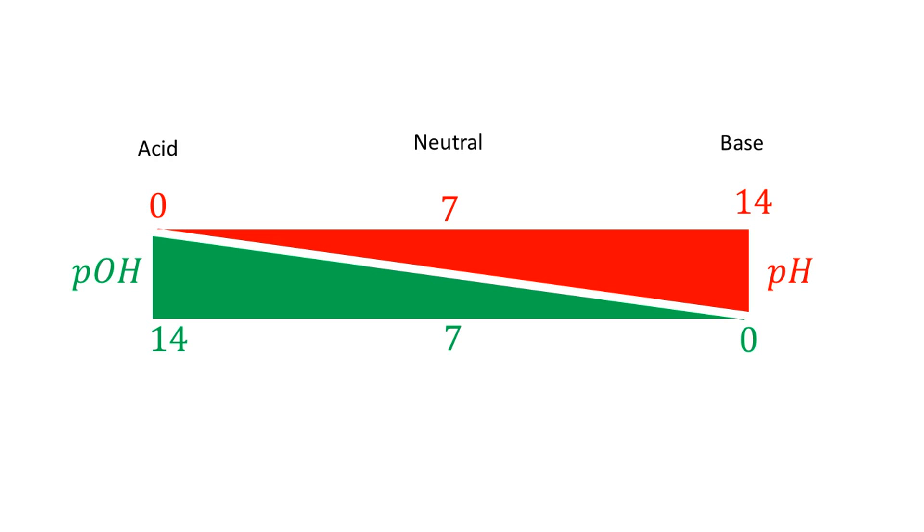pH 7, being the middle point of the scale, is considered a neutral pH. A lot of fluids in living organisms tend to have pH values close to neutrality.